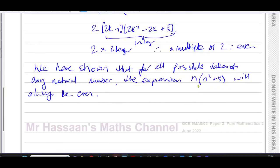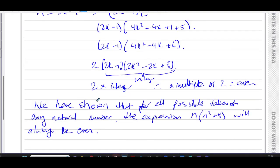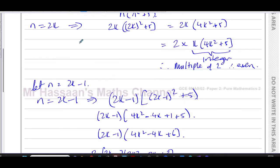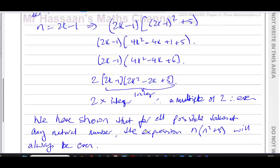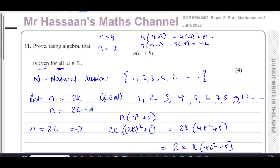So that's the answer to this question. You should always write your conclusion and show clearly that you've covered every single case. You don't always use 2k and 2k minus 1 or 2k plus 1 — you only do that when proving something is even. If it's about multiples of 3, you'd use 3k, 3k minus 1, and 3k plus 1 — three cases, because every number is either a multiple of 3, one more, or one less than a multiple of 3.